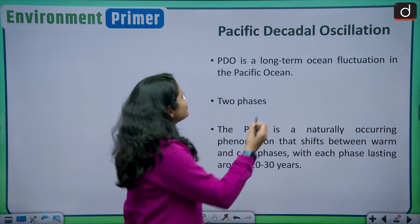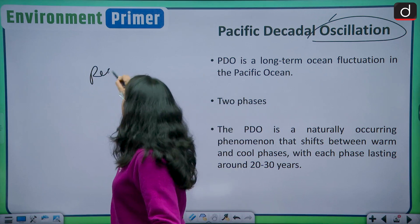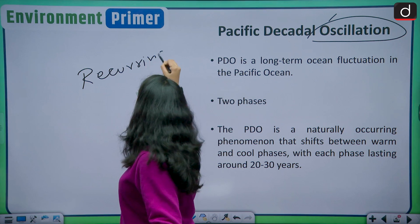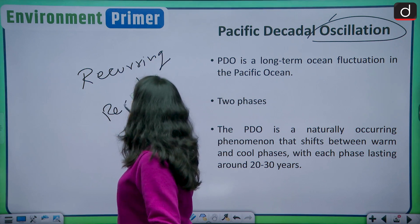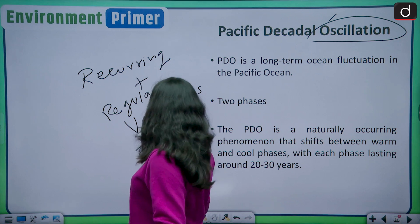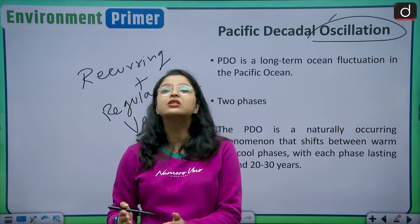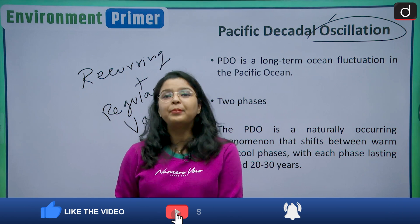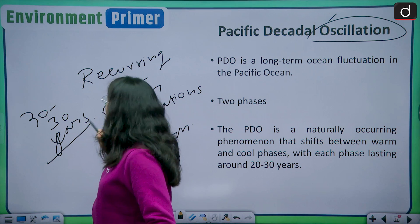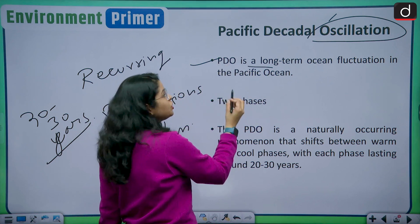To understand this phenomenon, let us first understand the meaning of oscillation. Oscillation refers to recurring, regular variations in a pattern. Basically, the phenomenon of Pacific Decadal Oscillation is a climatic weather pattern that happens around every 20 to 30 years and has a huge impact on climate and weather.